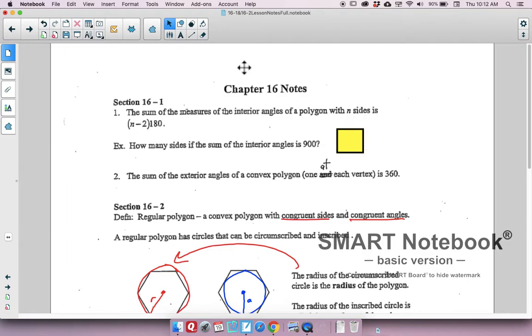So try and figure out how many sides there are if the sum of the interior angles is 900. What would you do in that case? Well, wouldn't you set up n minus 2, the quantity n minus 2 times 180 is equal to 900, and then solve for n. Yes, you sure would. And what did you get? Seven. Terrific.